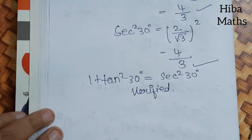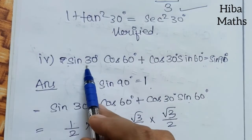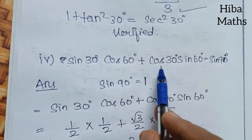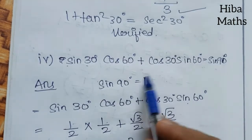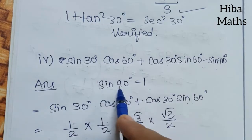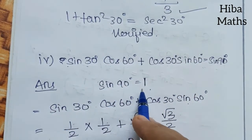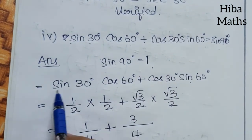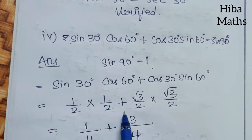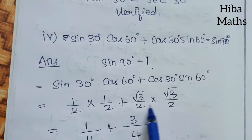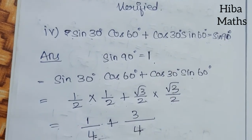4th question: sin30°·cos60° + cos30°·sin60° = sin90°. The value of sin90° = 1, so the answer is 1. sin30° = 1/2, cos60° = 1/2, cos30° = √3/2, sin60° = √3/2. So we get (1/2)(1/2) + (√3/2)(√3/2). From the table you can verify these values.